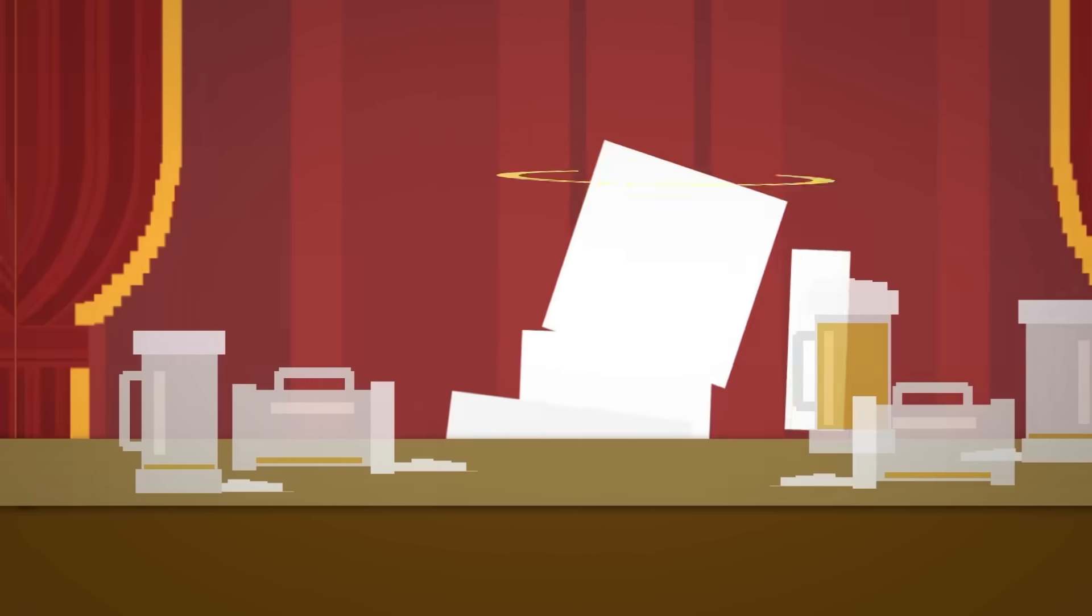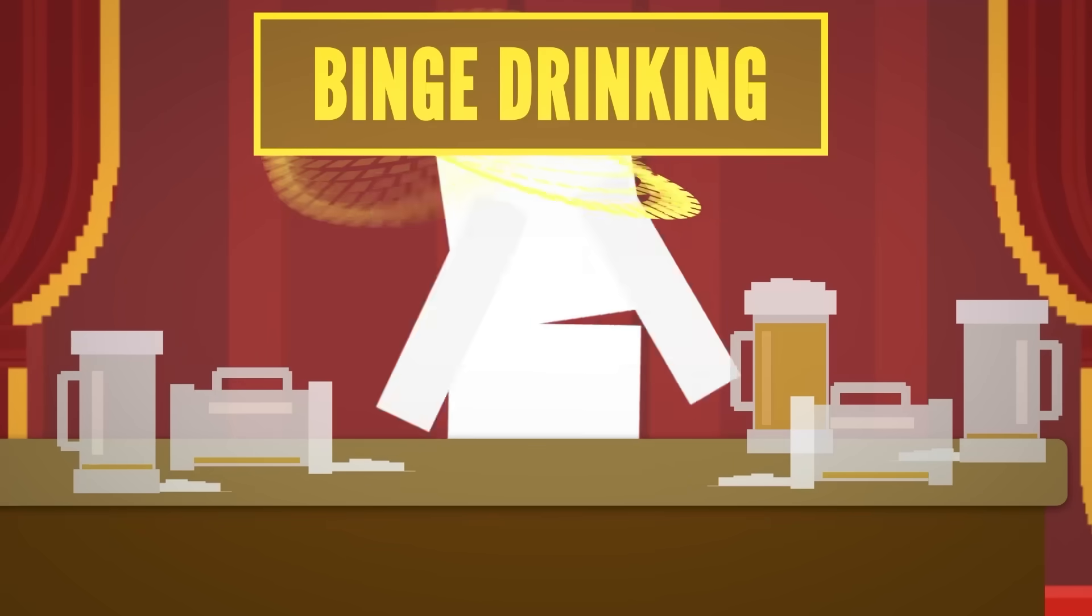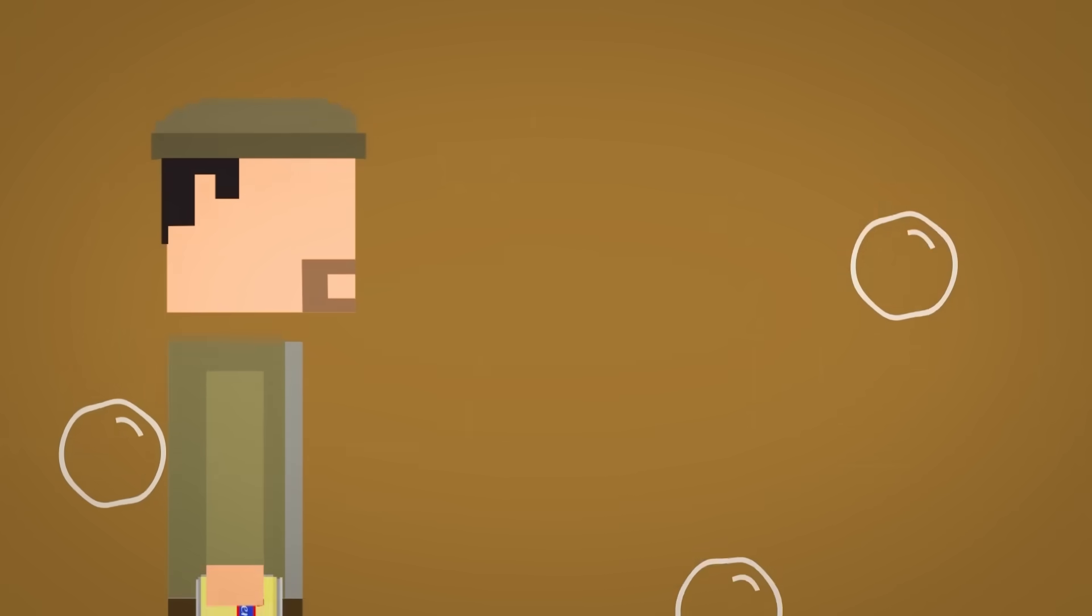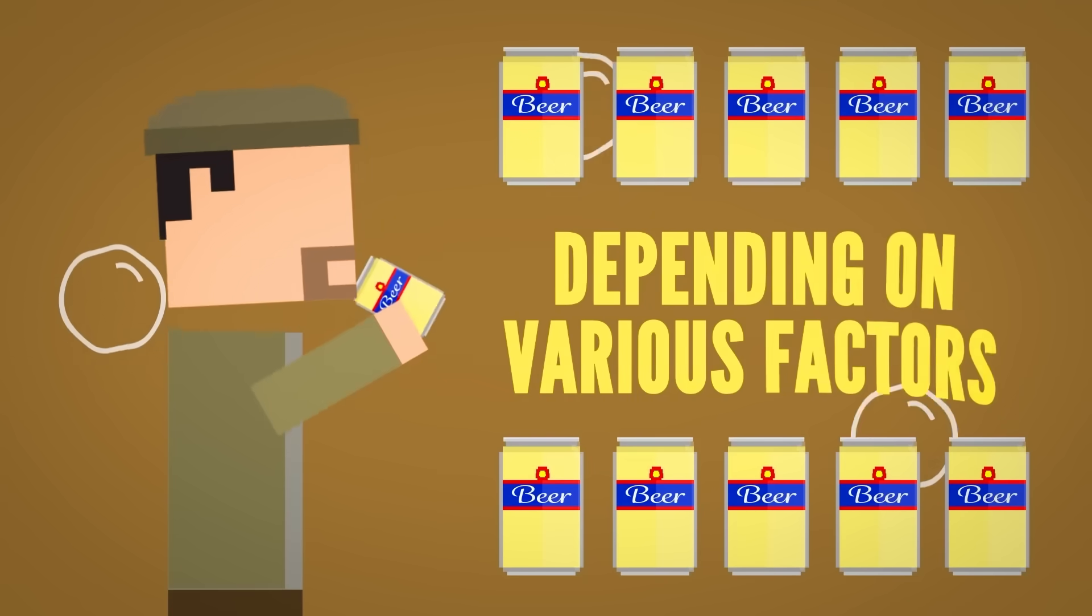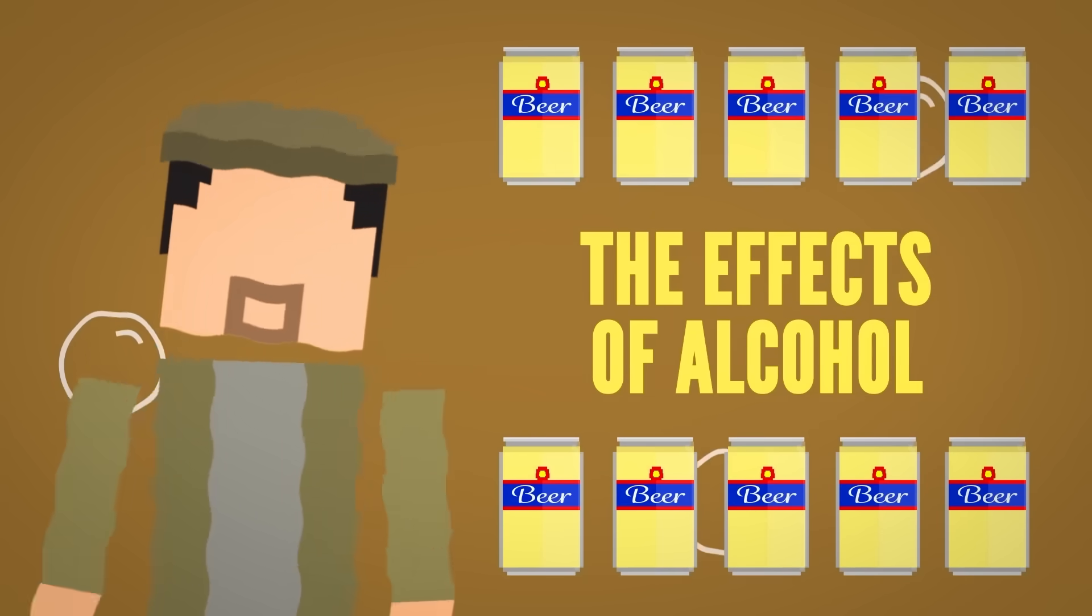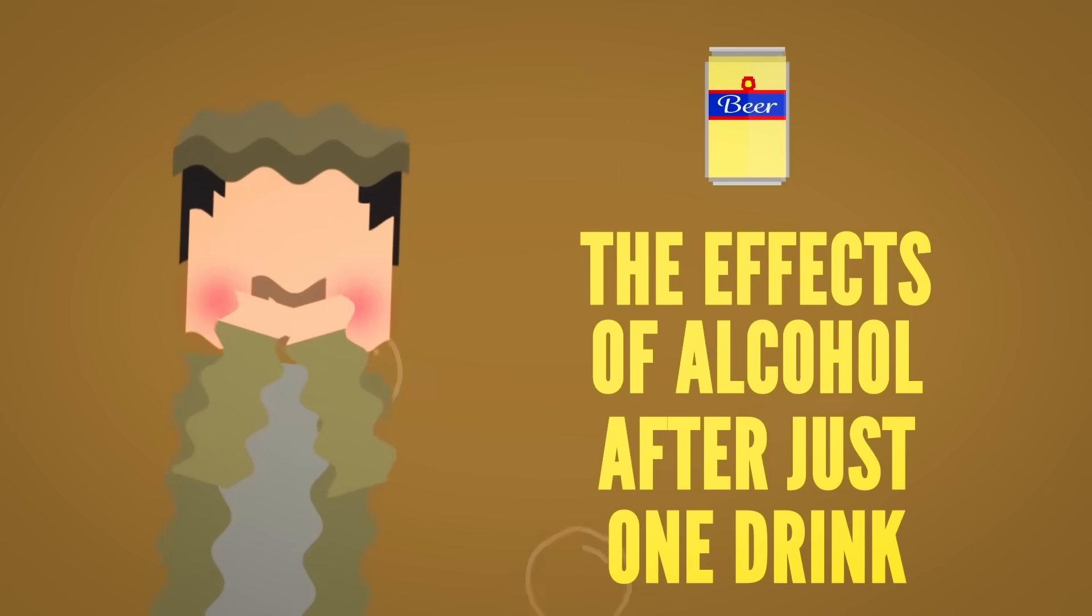So what do you think a night of binge drinking does to it? Binge drinking is when someone consumes more than four or five alcoholic drinks in one occasion depending on various factors, but the effects of alcohol begin after just one drink.